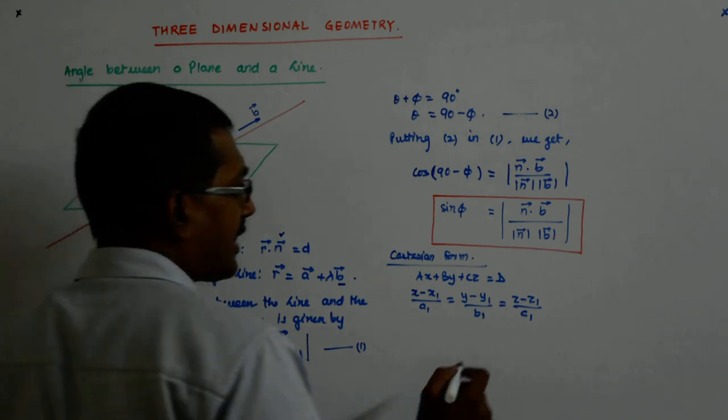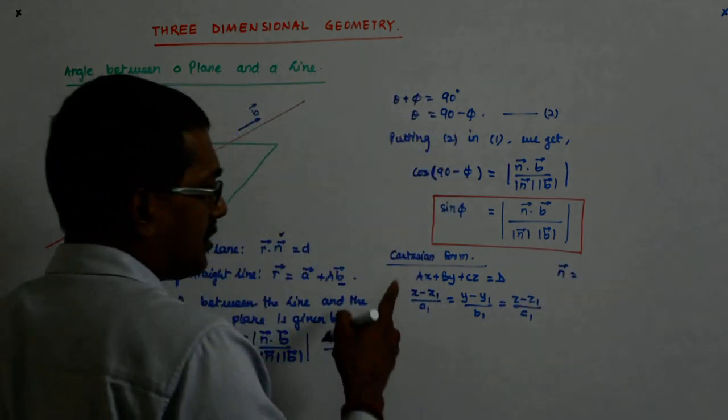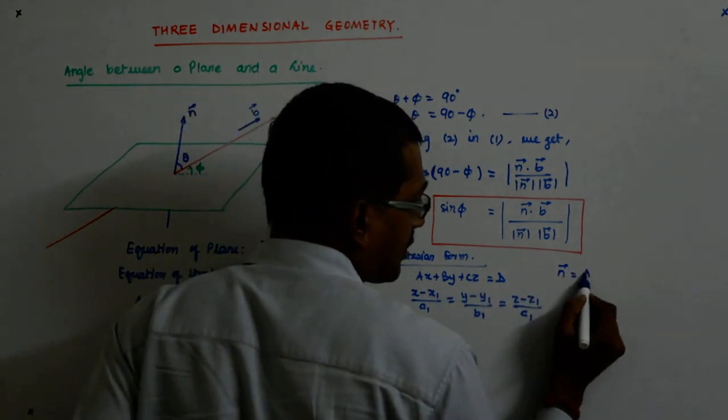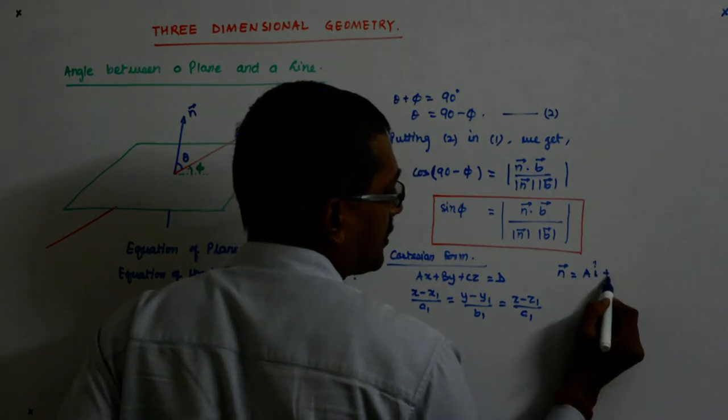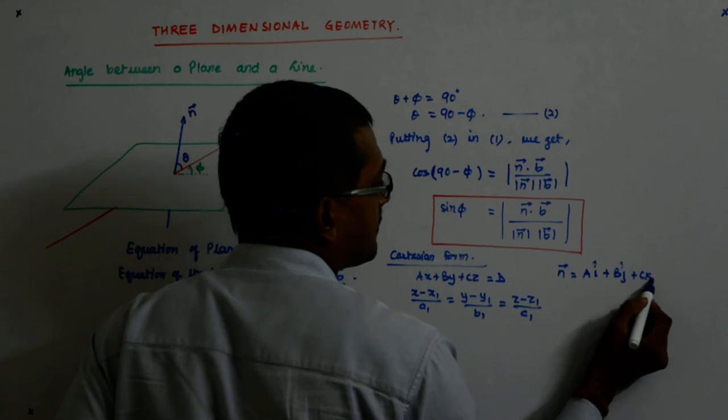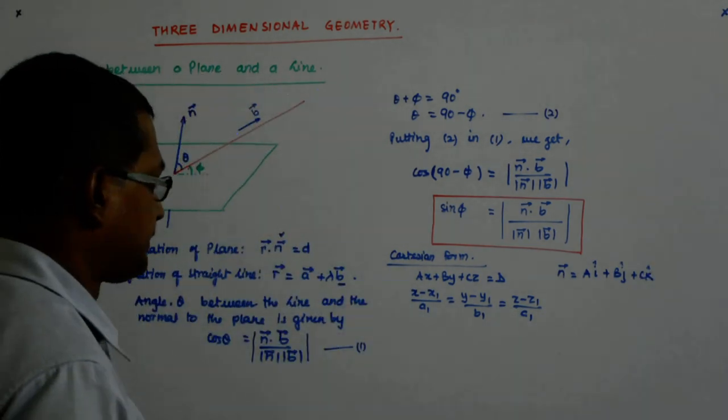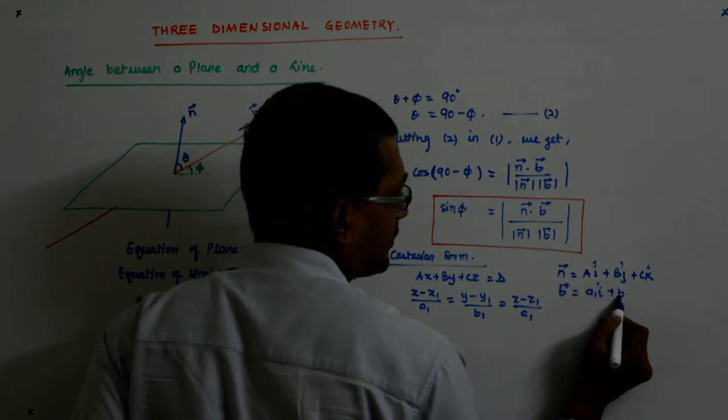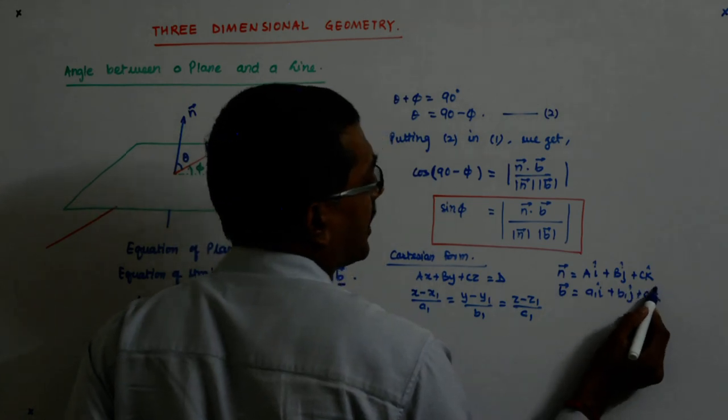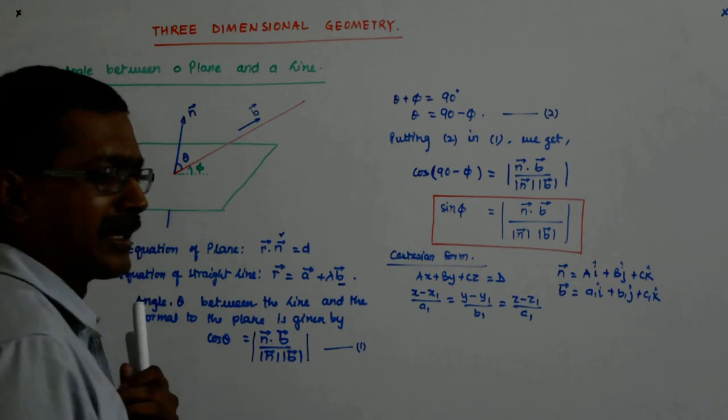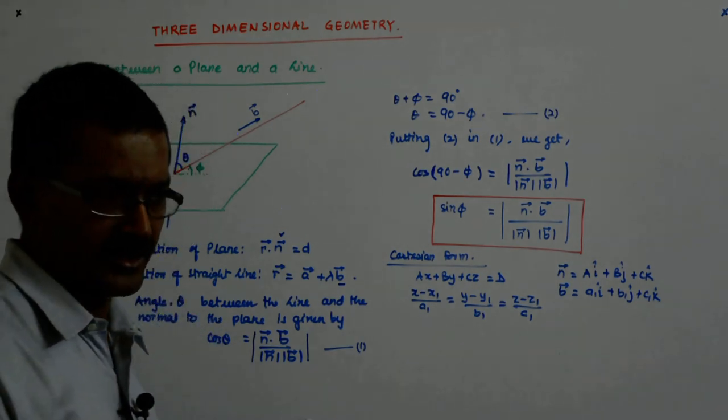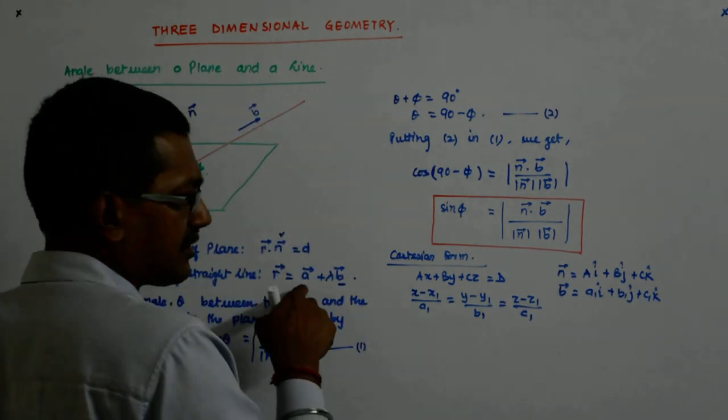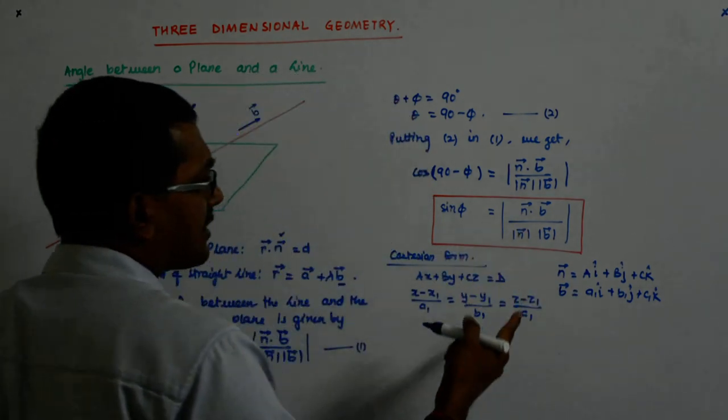Then, can you tell me what n is and what b is? What is n? It gets dotted with r. If it gets dotted with r, it has to be a i cap, b j cap, c k cap. What is b? b is a1 i cap, b1 j cap, c1 k cap. I had asked you, don't intermingle them. a1, b1, c1. Now, here is direction ratio. Here, it is not direction ratio. So, just understand.